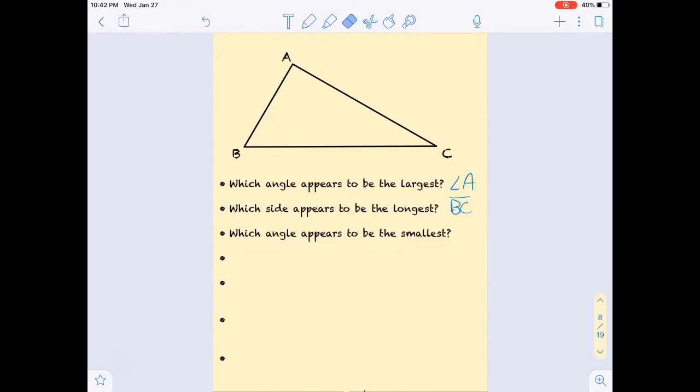Next, which angle appears to be the smallest? B and C are both pretty small, but C is the smallest. Next, which side appears to be the shortest? And I'm sure you can tell that is AB.